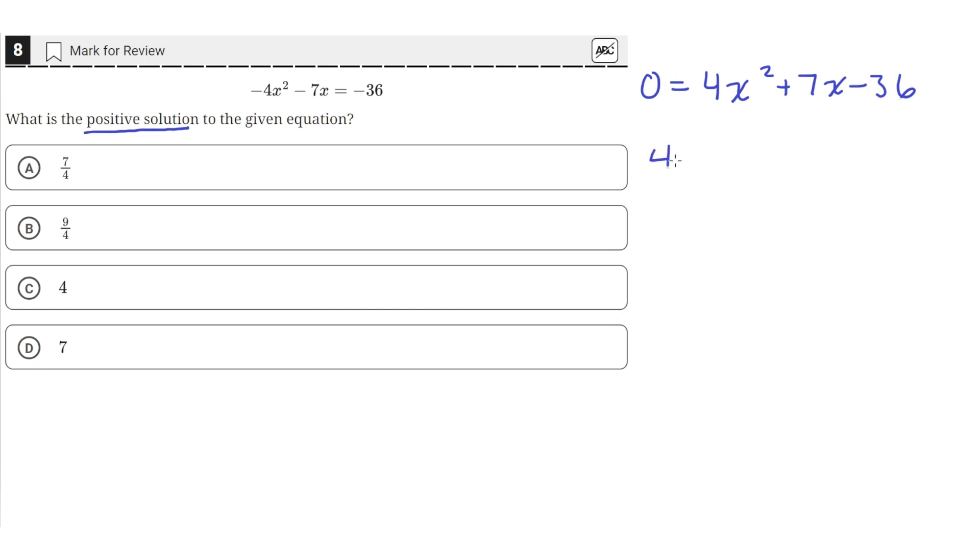So when we multiply 4 with negative 36, we get negative 144. Now this number is special because we have to split this middle term in here, the b term, which is the coefficient of the x term, into two terms that, when multiplied together, equals this product right here. So what we're saying is that we have to split 7 into two different numbers that, when you multiply together, equals 4 times negative 36.